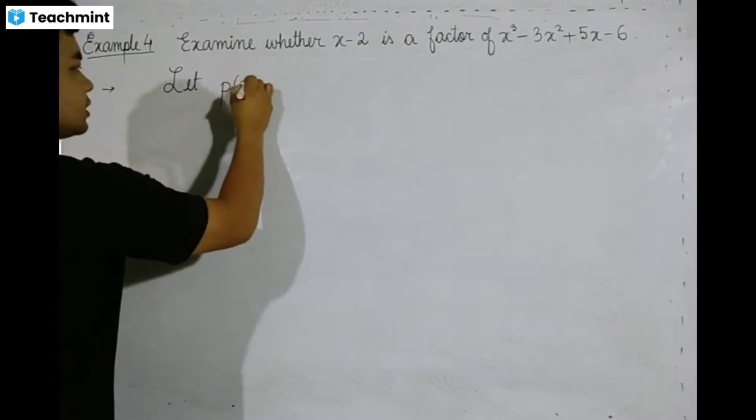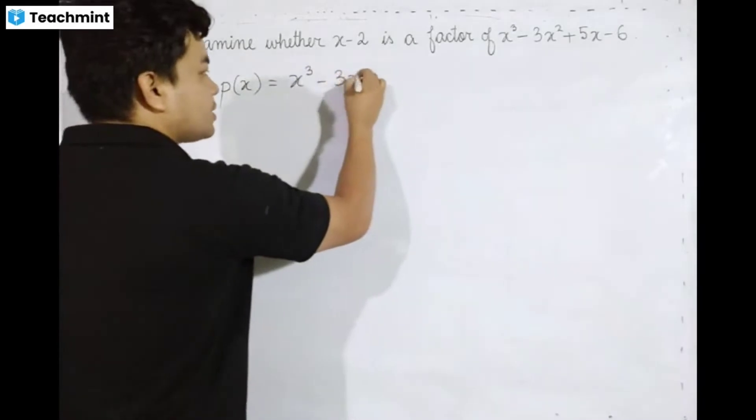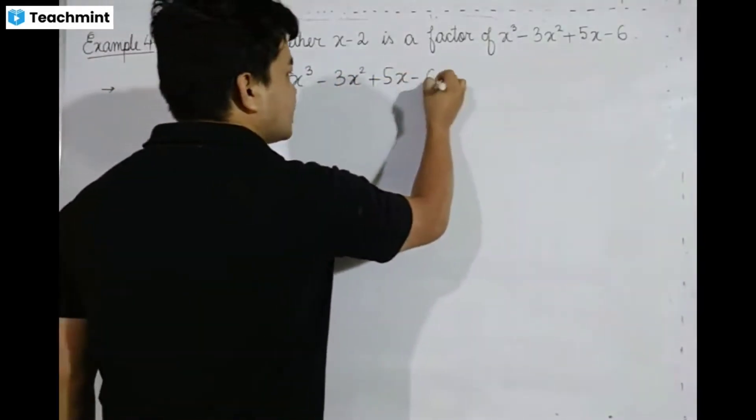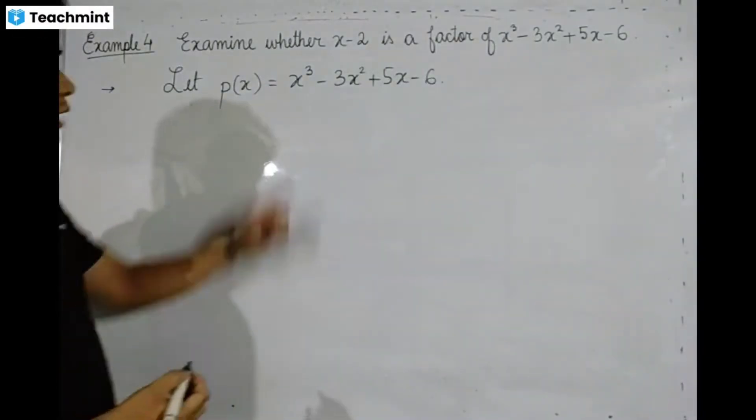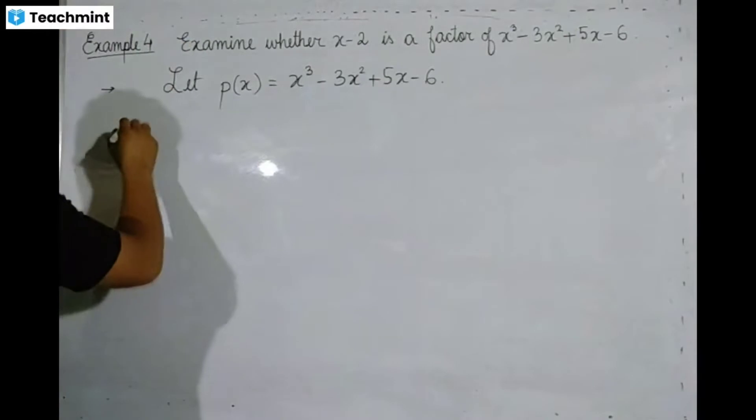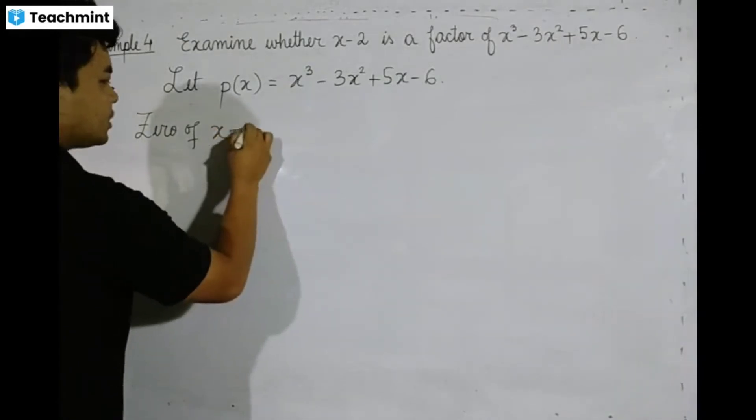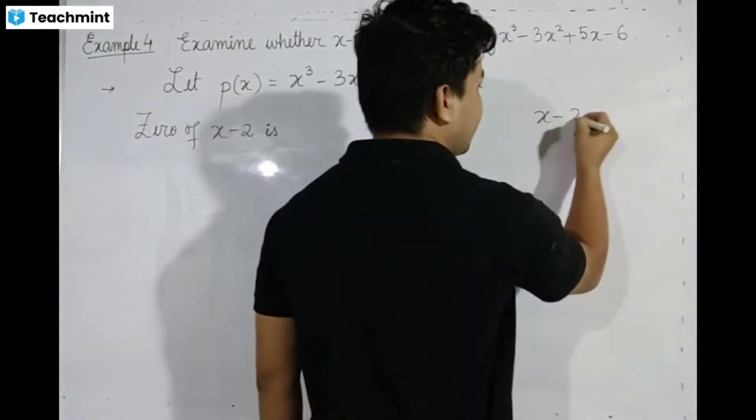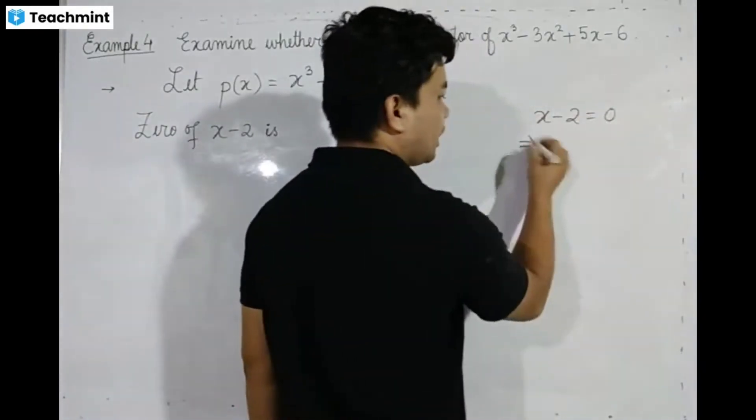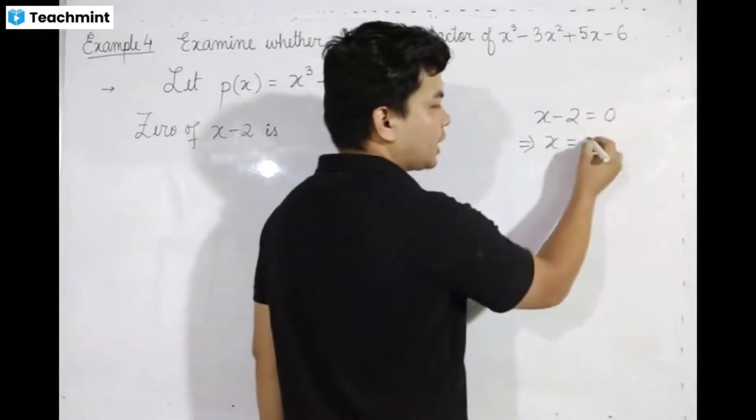p of x is equal to x cubed minus x squared plus 5x minus 6. Now, x minus 2 is equal to 0, so x is equal to plus 2.